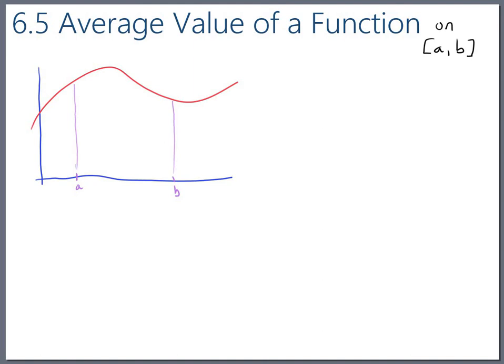One thing we could do is we could sort of turn this continuous question into a discrete question and say let's just look at the function at six different places. So one, two, three, four, five, six. These really should be evenly spaced, so maybe let's pretend we're looking at it over seven places.